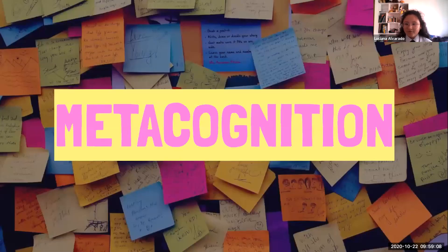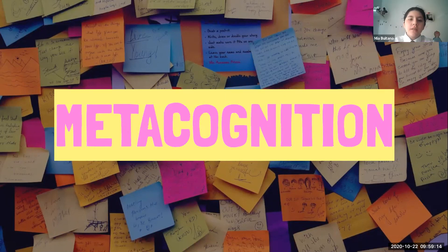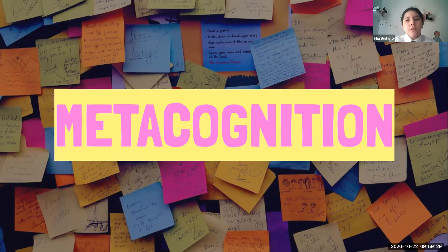Now we have the metacognition section and will answer some questions. What have we learned throughout the process of this activity? Personally, I think I've learned how to evaluate someone else and how to create a rubric, which is very important since it gives us the perspective of how a teacher feels and how it feels to evaluate someone taking into account everything that requires a good presentation.